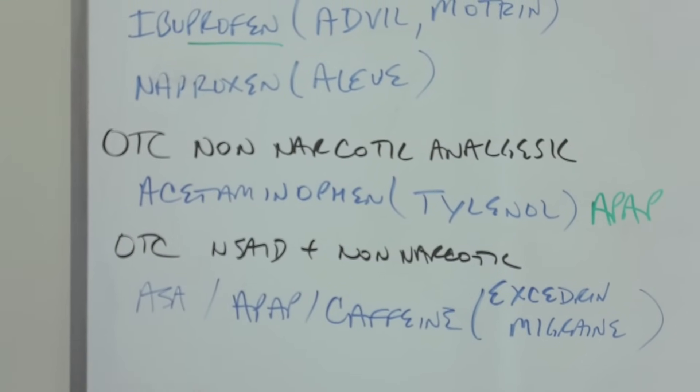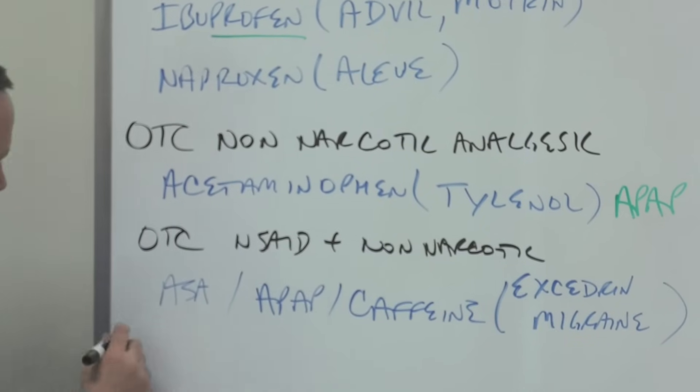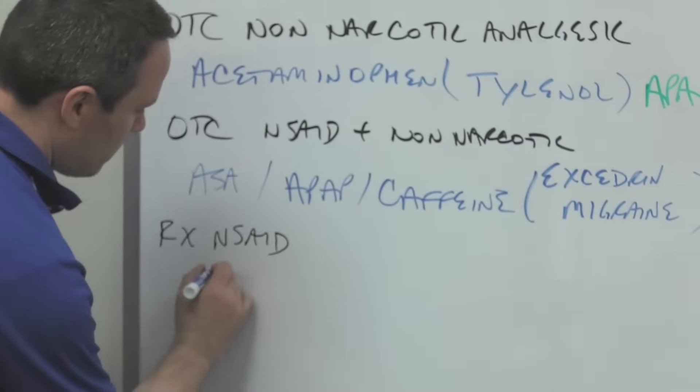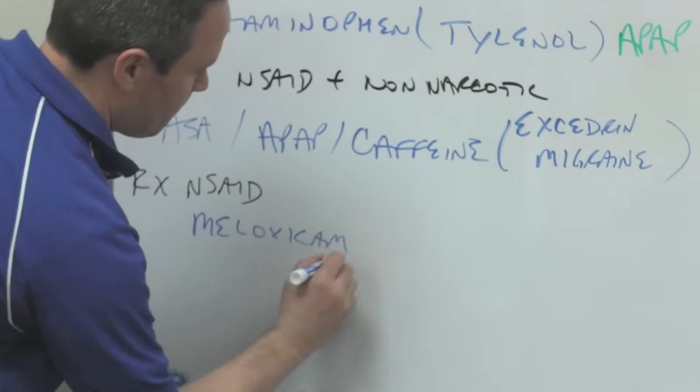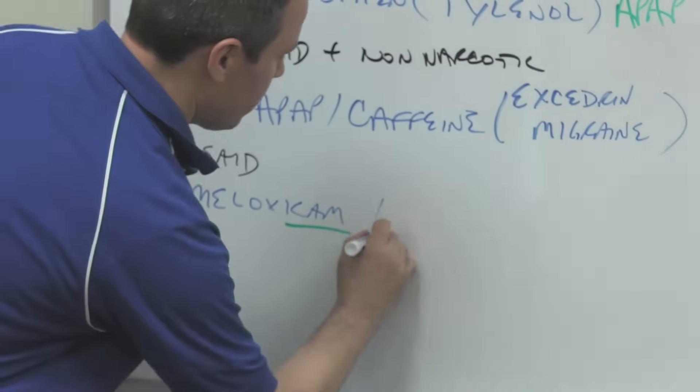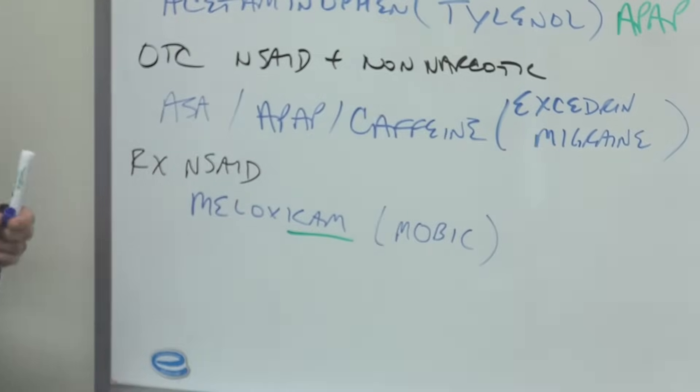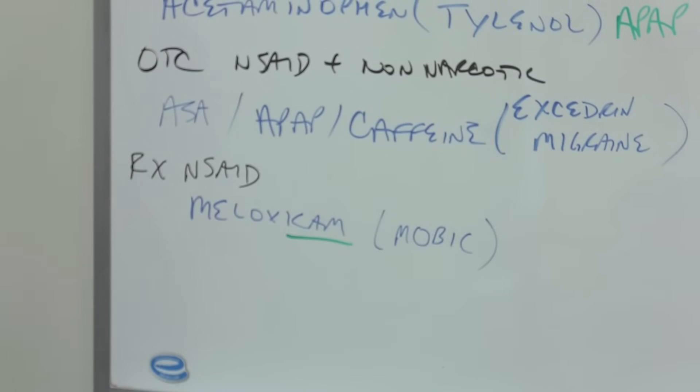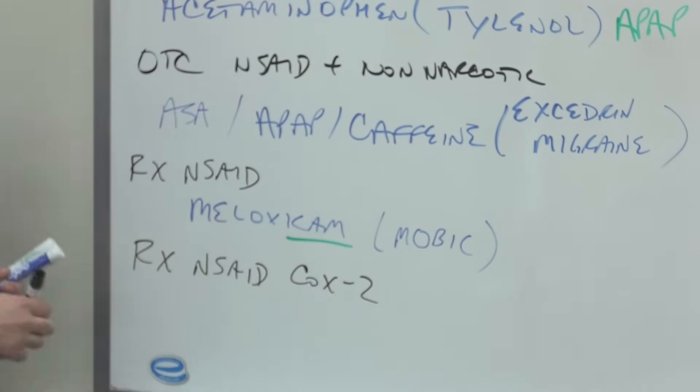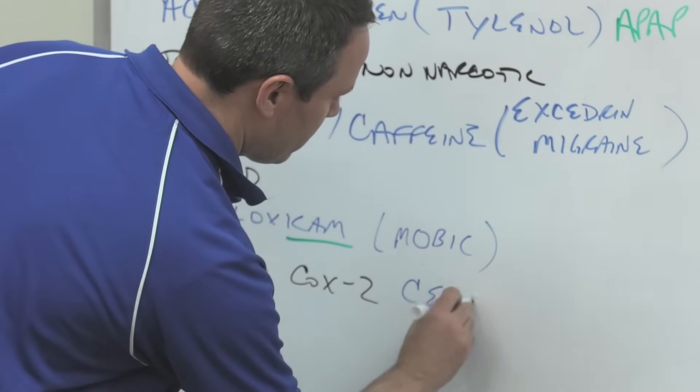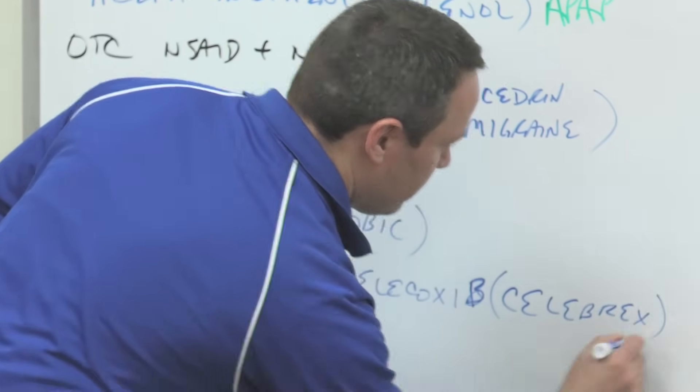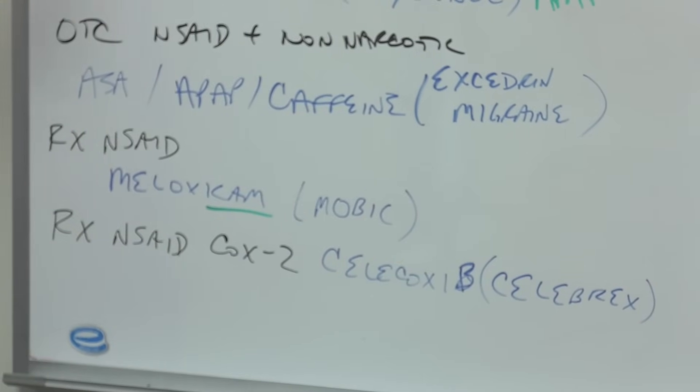So we started with the OTCs, and a natural movement or progression is from OTC to Rx. So let's go to the Rx NSAIDs. And the first one we'll look at is meloxicam, and this also has a stem, ICAM, and that's Mobic. And then we also have another Rx NSAID that's a COX-2 inhibitor. That one's going to be Celebrex or celecoxib.